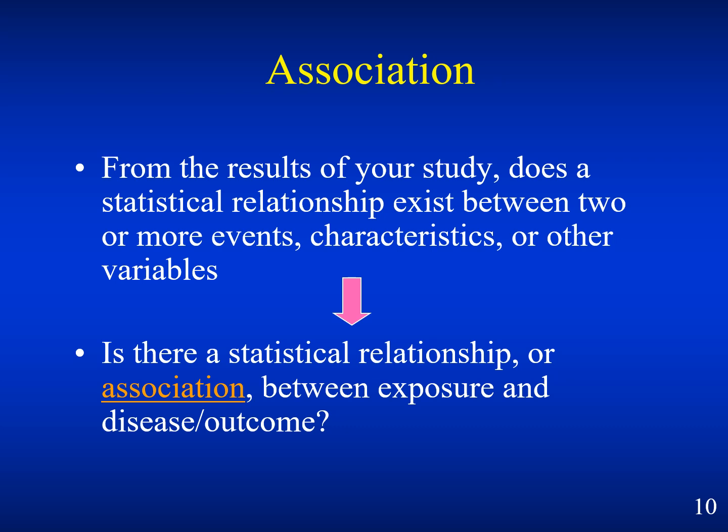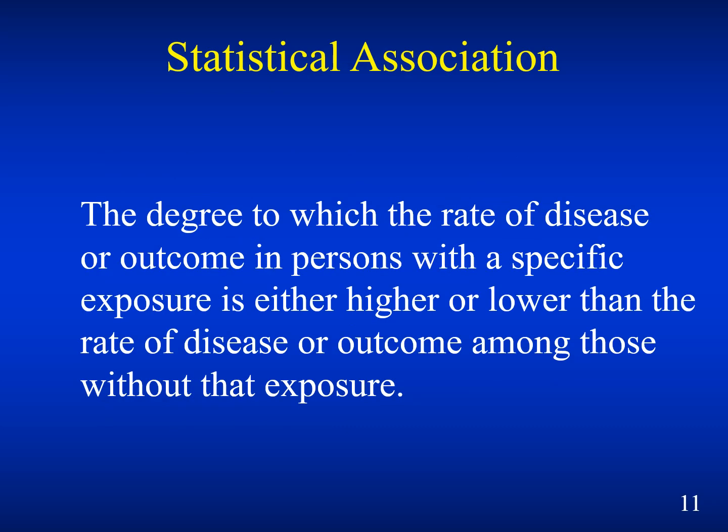Association: from the results of your study, does a statistical relationship exist between two or more events, characteristics, or other variables? We ask: is there a statistical relationship or association between exposure and disease outcome? This is the degree to which the rate of disease or outcome in persons with a specific exposure is either higher or lower than the rate of disease or outcome among those without that exposure — that is statistical association.